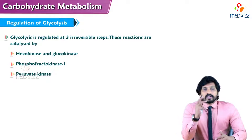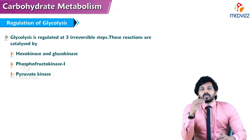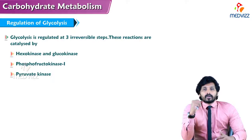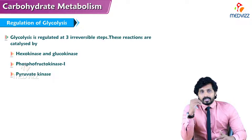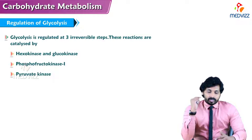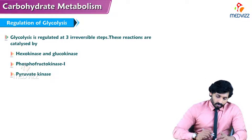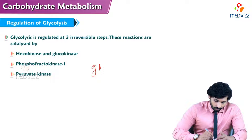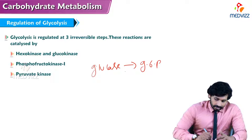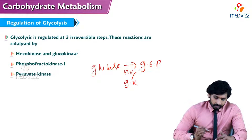Glycolysis is regulated at three irreversible steps. There are ten total steps in glycolysis, and out of these ten, three steps are irreversible — the first, third, and tenth step. The first step is the conversion of glucose to glucose-6-phosphate by the enzyme hexokinase or glucokinase.